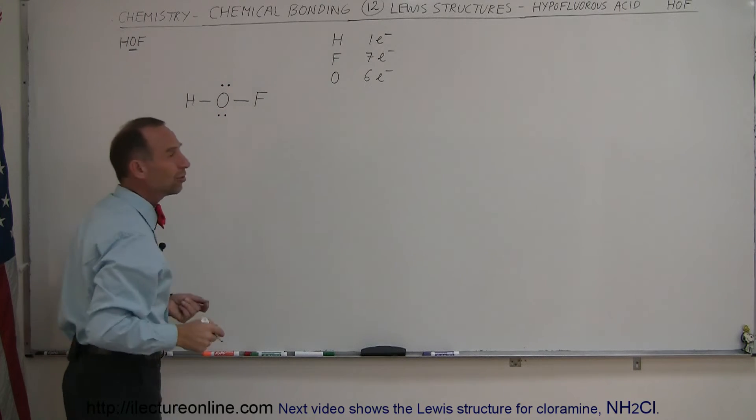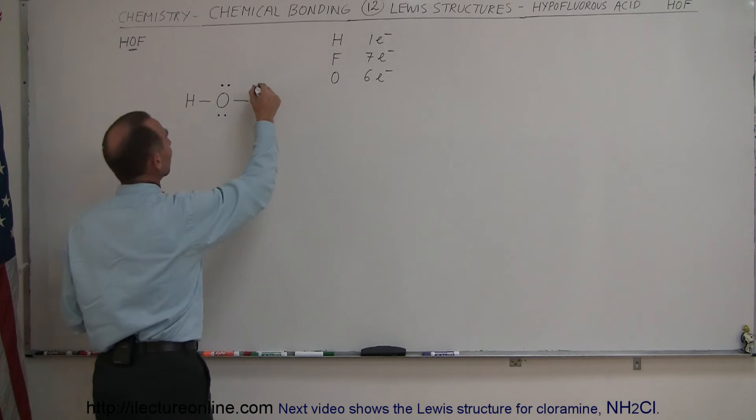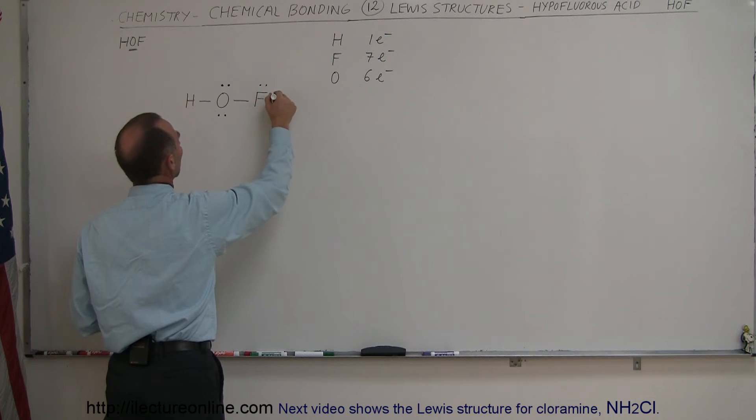For fluorine, one is already used in the bonding, so there must be six remaining. So let's place them over there.